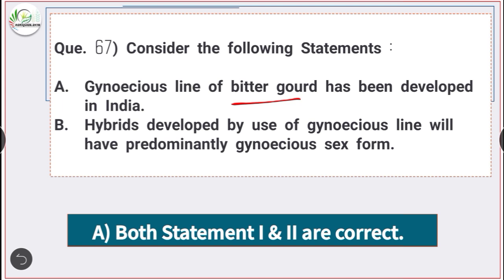Statement B: Hybrids developed by use of gynoecious line will have predominantly gynoecious sex form. Both statements 1 and 2 are correct.